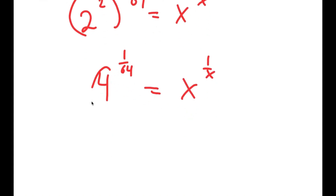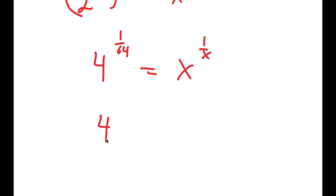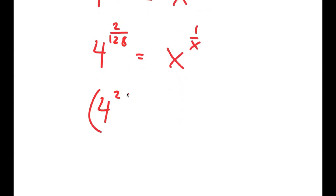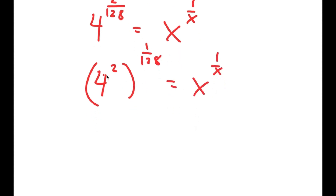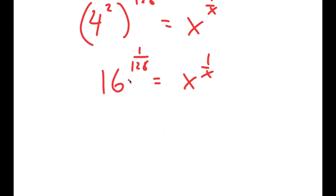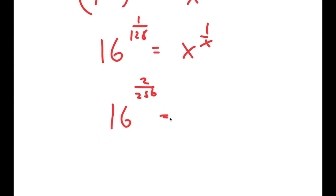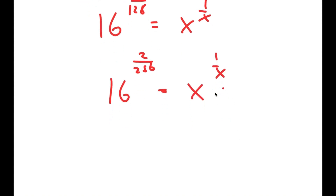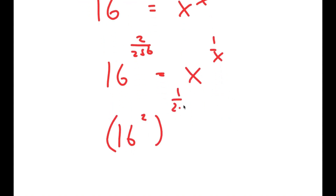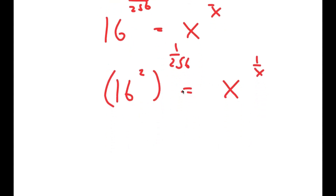These two numbers still aren't the same, so we're going to repeat the process. 1 over 64 is the same thing as 2 over 128, and I can rewrite this as 4 squared to the power of 1 over 128. Now 4 squared is 16, so I get 16 to the power of 1 over 128 equals x to the power of 1 over x — still not the same. Repeating once again: 16 to the power of 2 over 256, which is 16 squared to the power of 1 over 256. And 16 squared is 256, so I get 256 to the power of 1 over 256 is equal to x to the power of 1 over x.